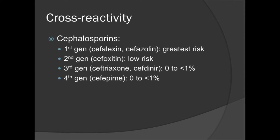The cross-reactivity is not driven by the beta-lactam ring — it's actually the side chain. First- and second-generation cephalosporins have side chains most similar to amoxicillin and ampicillin. Second-generation (cefoxitin) is lower risk, but generally if someone has a true penicillin allergy, most people will avoid first- and second-generation cephalosporins.